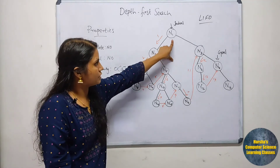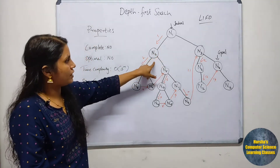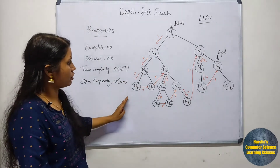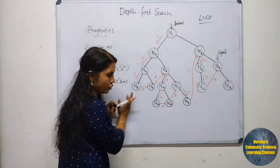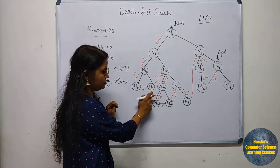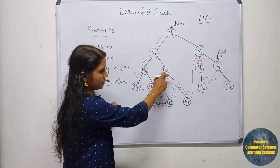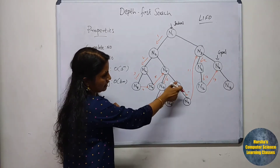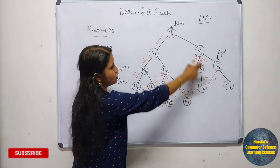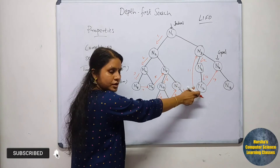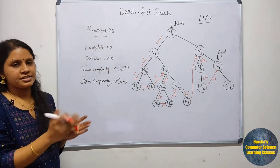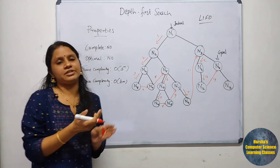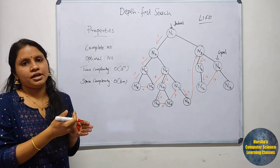Starting from the initial node N1, we expand N2, then N4, then N8. After N8 there are no more nodes to visit, so we move to N9, then N5, then N10, N14, N15, N11, N16, then N3, N6, N12, and finally N7. We explore all nodes at the deepest level, from one neighbor node to another.